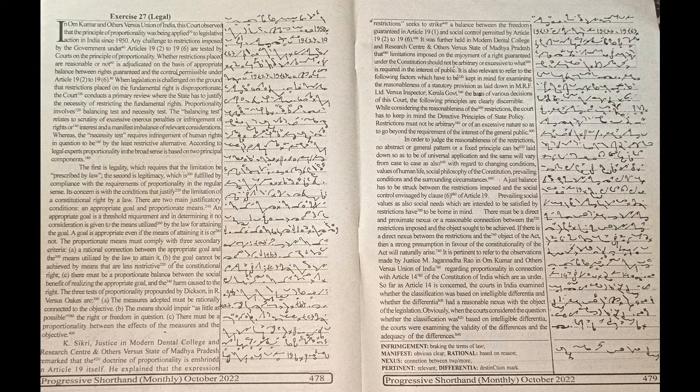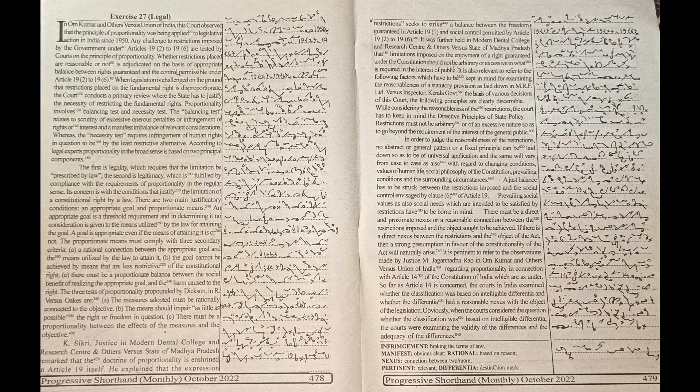Prevailing social values as also social needs which are intended to be satisfied by restrictions have to be borne in mind. There must be a direct and proximate nexus or a reasonable connection between the restrictions imposed and the object sought to be achieved. If there is a direct nexus between the restrictions and the object of the Act, then a strong presumption in favor of the constitutionality of the Act will naturally arise.